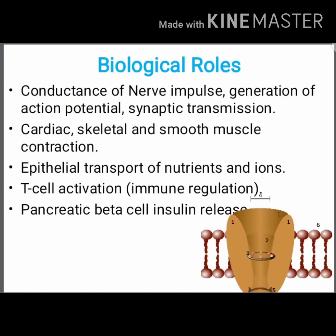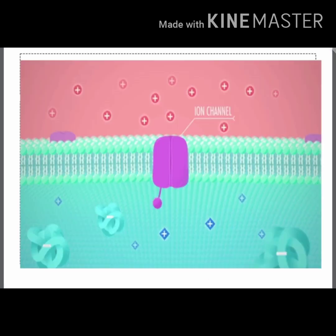Ionic channels have a wide range of roles in other systems as well. Examples include: conductance of nerve impulses, generation of action potential, synaptic transmission in the brain, cardiac, skeletal and smooth muscle contractions, epithelial transport of nutrients and ions, activation of T-cells and immune regulation in the immune system, and release of insulin from beta cells in the pancreas.